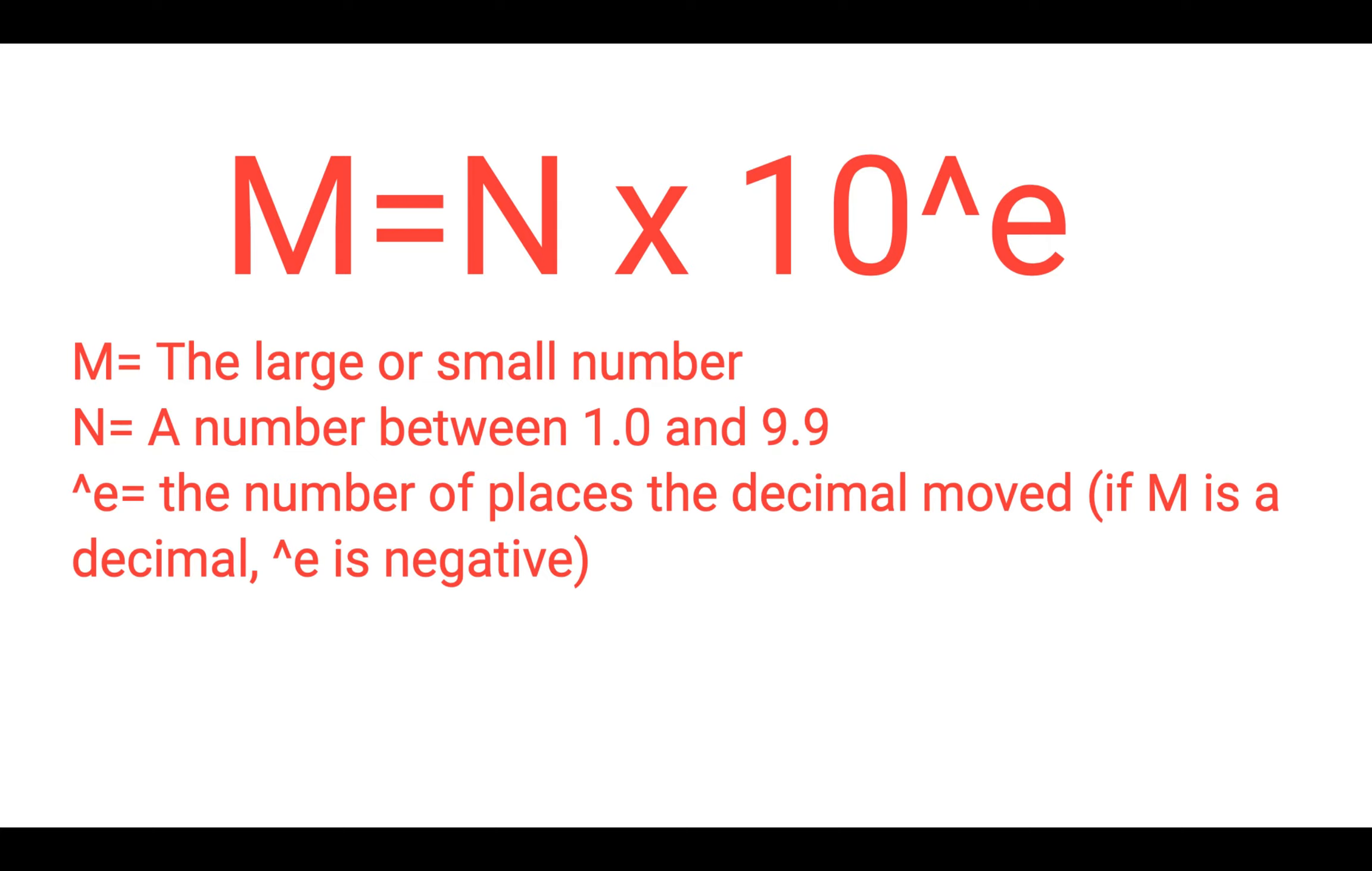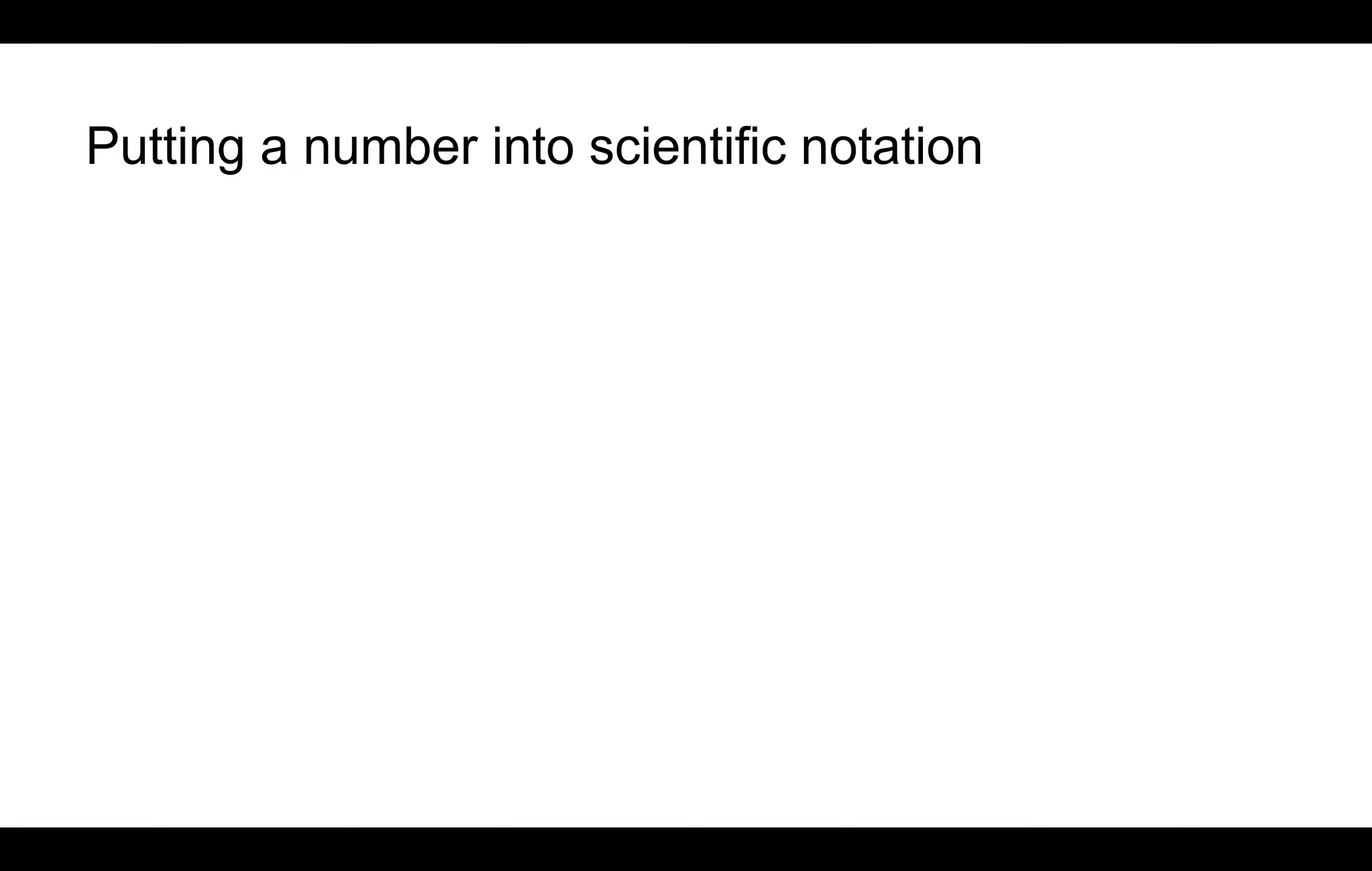And that exponent is the number of places the decimals moved. If M, the original number, is very small as a decimal, then the exponent will be negative.